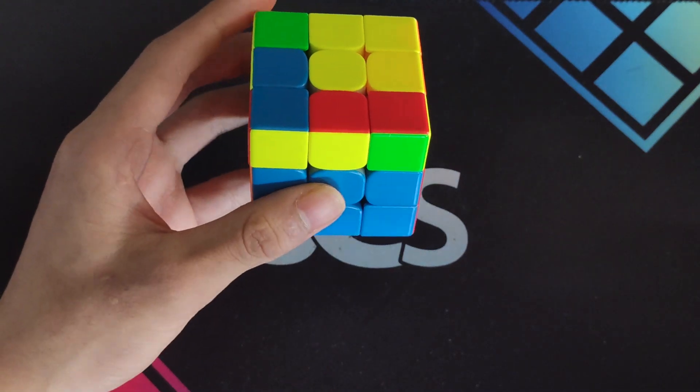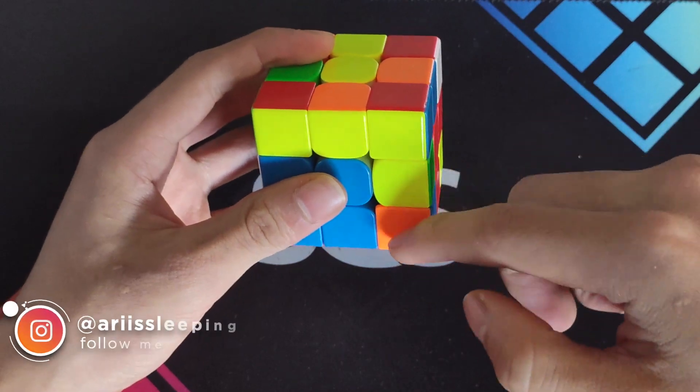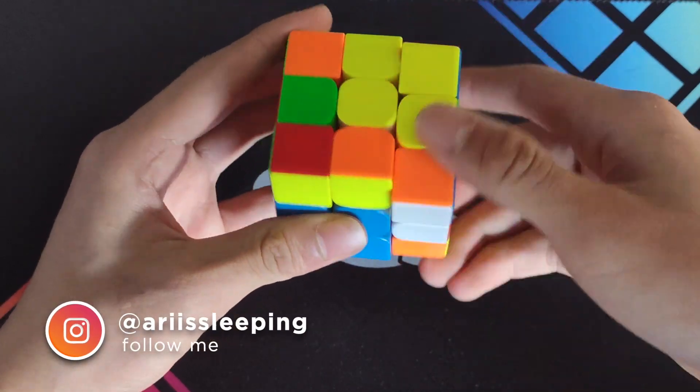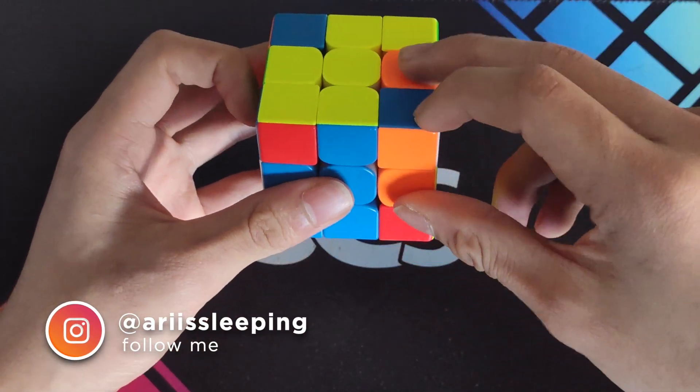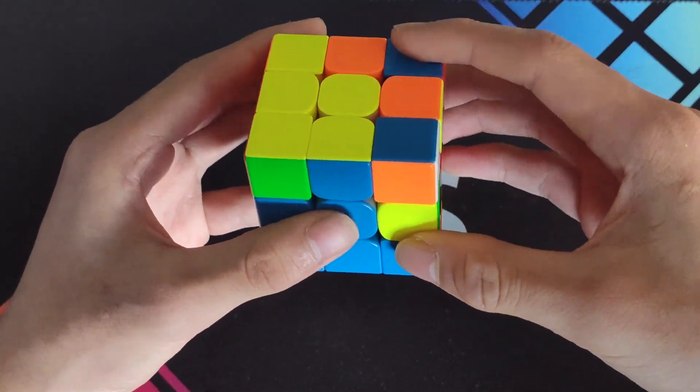and then F'. Here I have this pair here, what I can do is a U', an F, and then I can pretend I have a free slot in the front-right here, solve it into the back, and then solve into the front-left. U', pair it up like so,